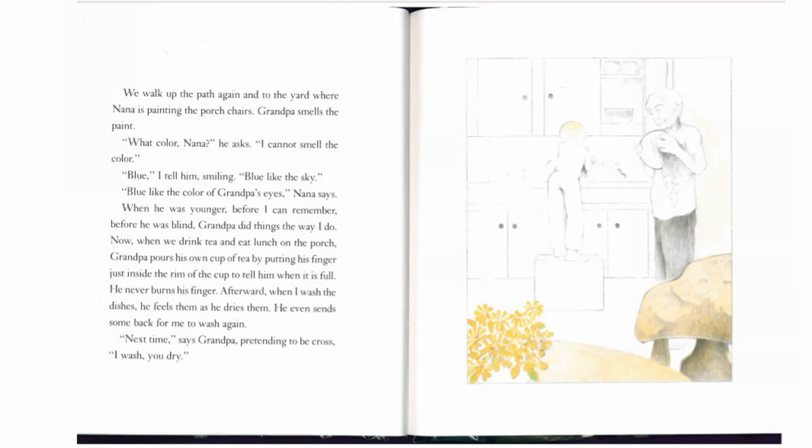We walk up the path again to the yard where Nana is painting the porch chairs. Grandpa smells the paint. What colour, Nana, he asks. I cannot smell the colour. Blue, I tell him, smiling. Blue like the sky. Blue like the colour of grandpa's eyes, Nana says.